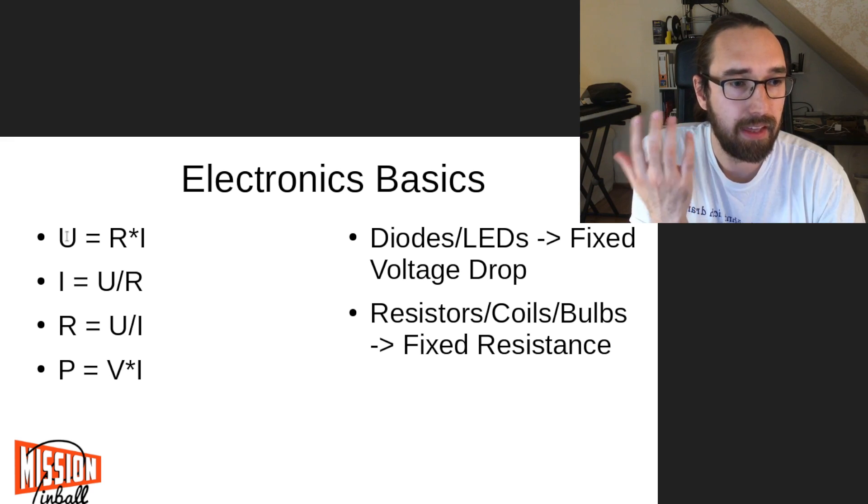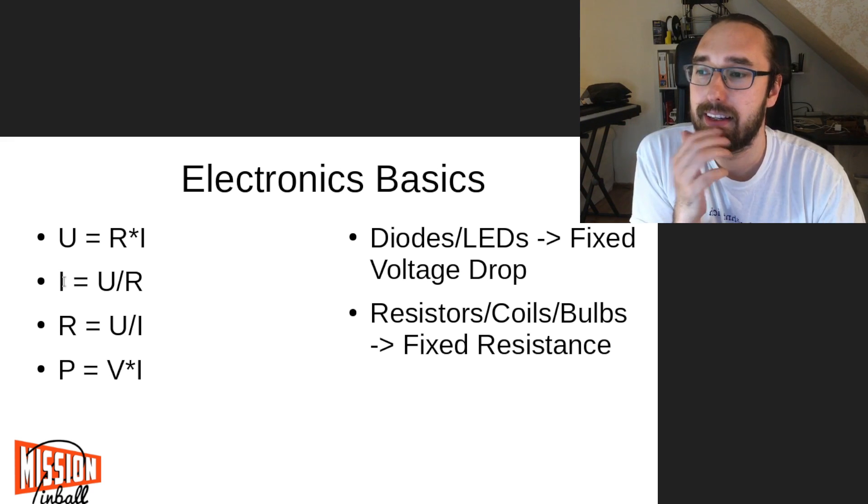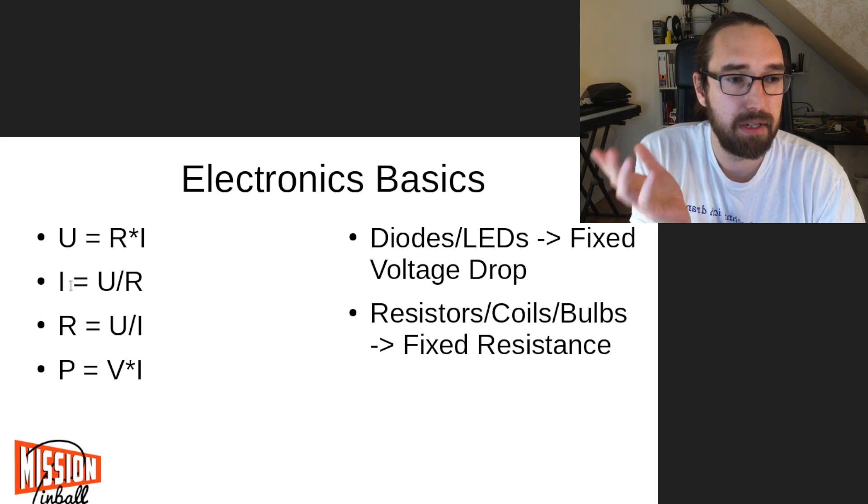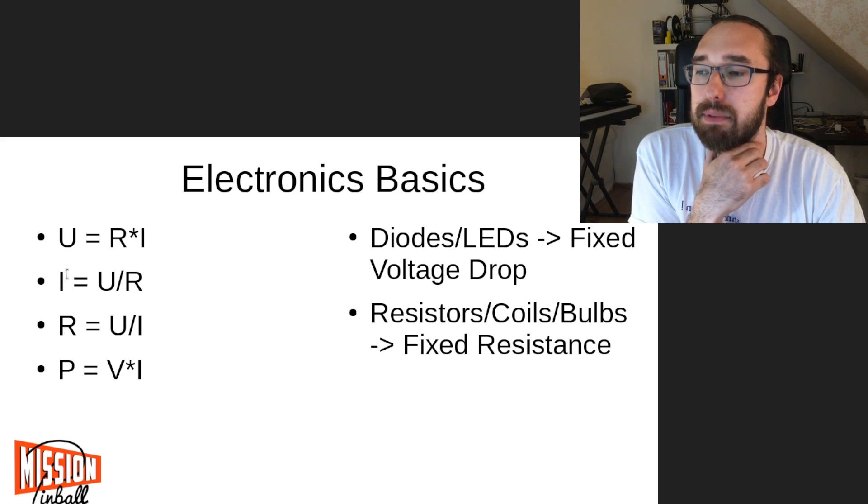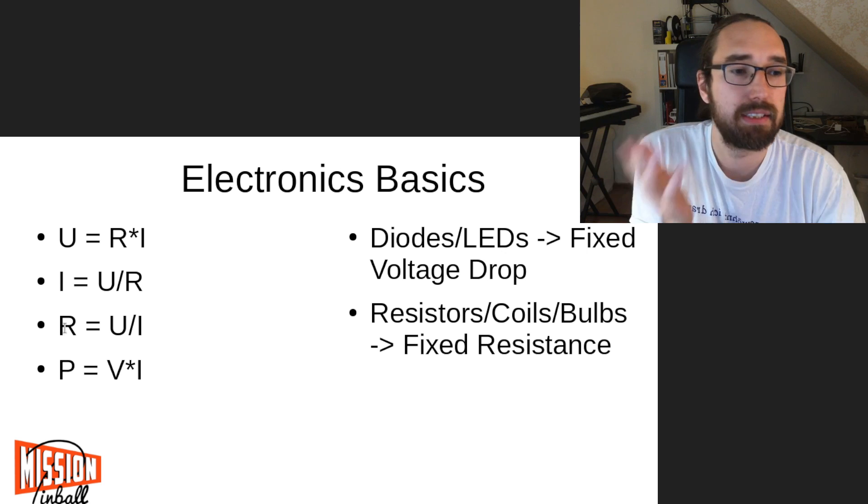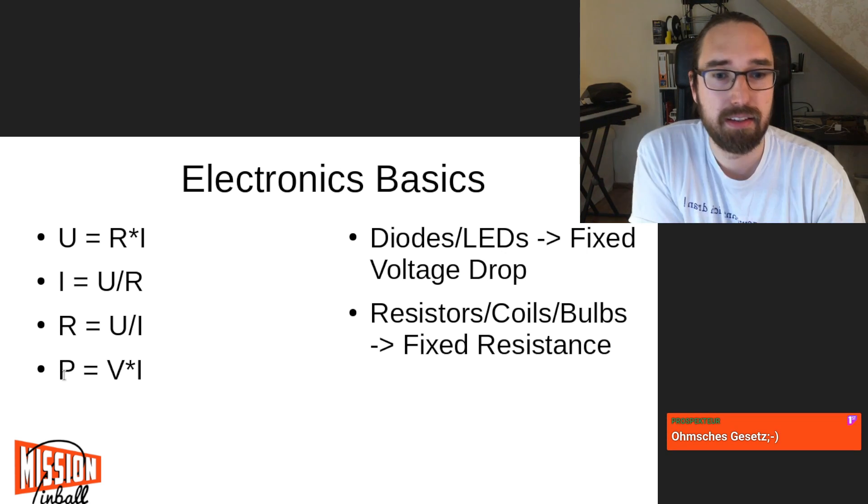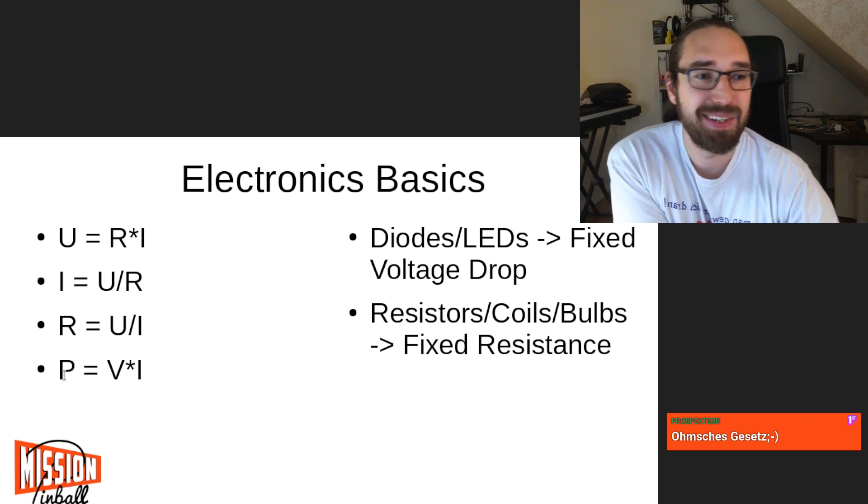Units are: U is voltage, I is current - it's ampere or amps - and resistance is ohms. And power is watts.